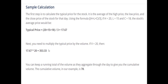Using the formula, H represents the high, L represents the low, and C is the close. So the formula is (H + L + C) / 3. For example, if H = 20, L = 15, and C = 18, the typical price would be 17.67. Next, you multiply the typical price by the volume. If V = 20, then the total value will be 353.33.